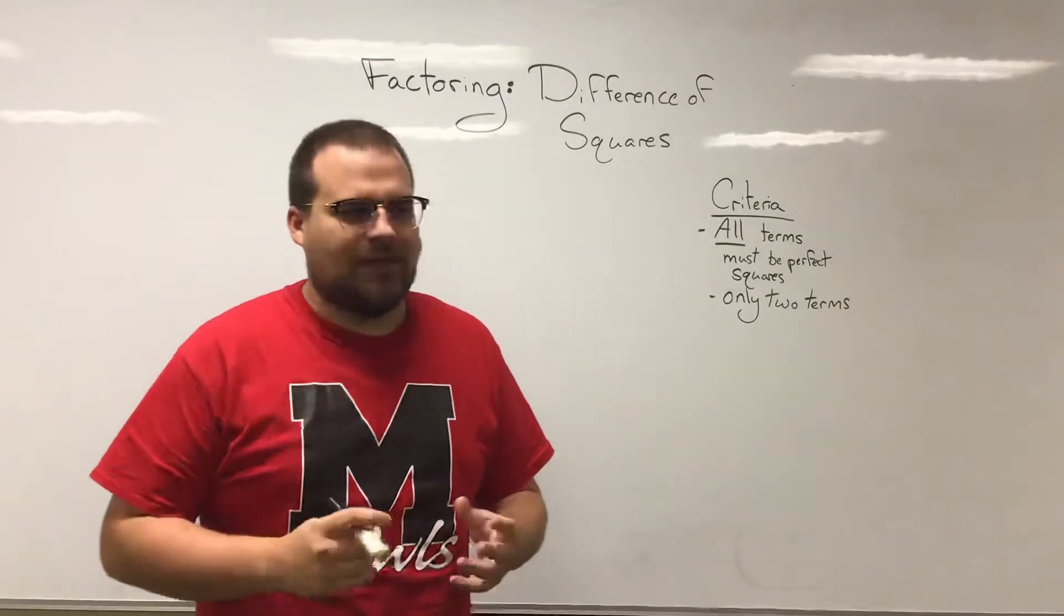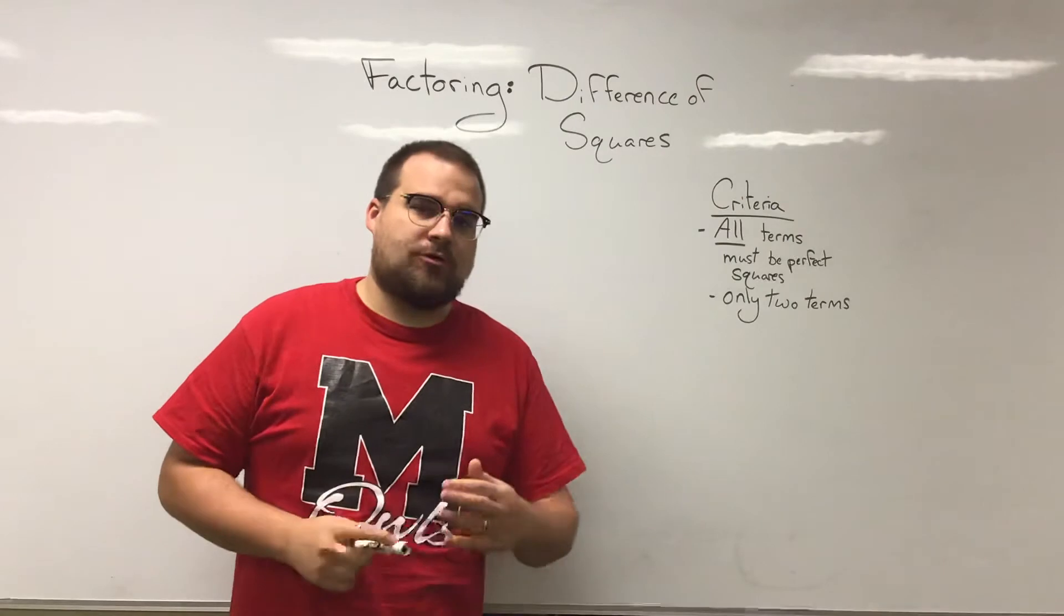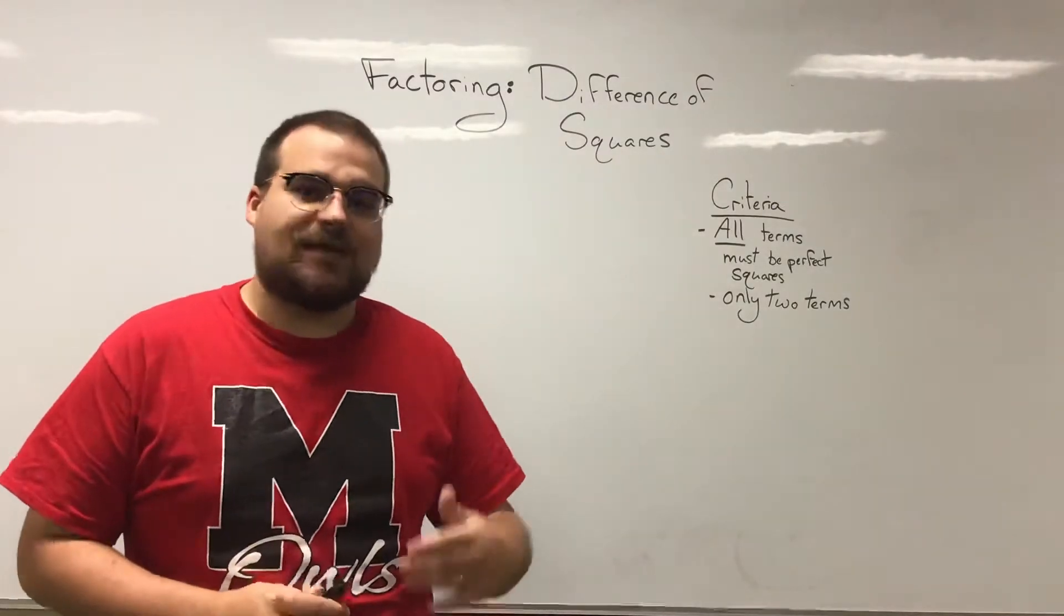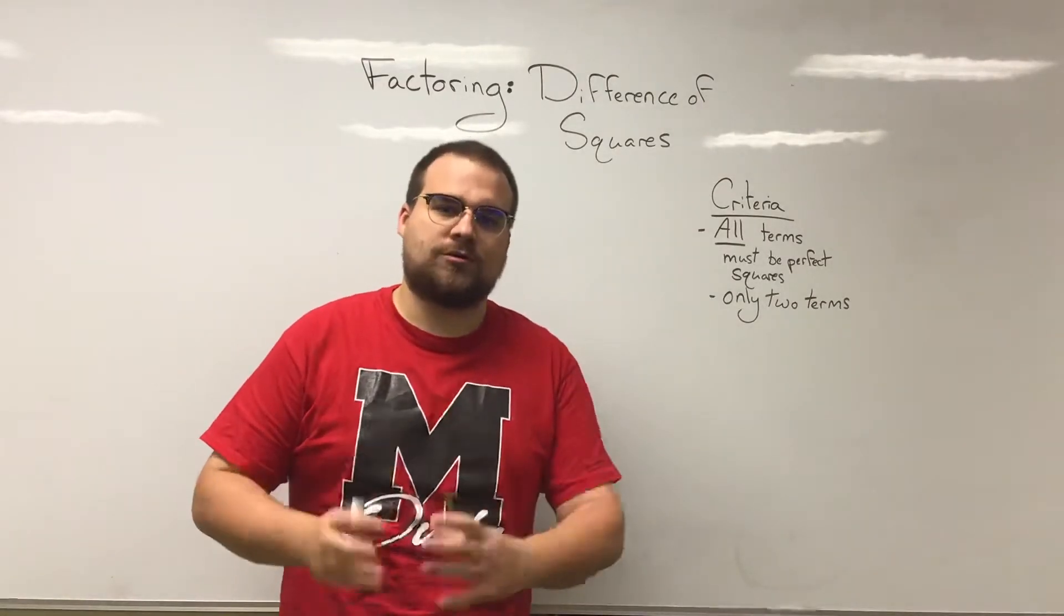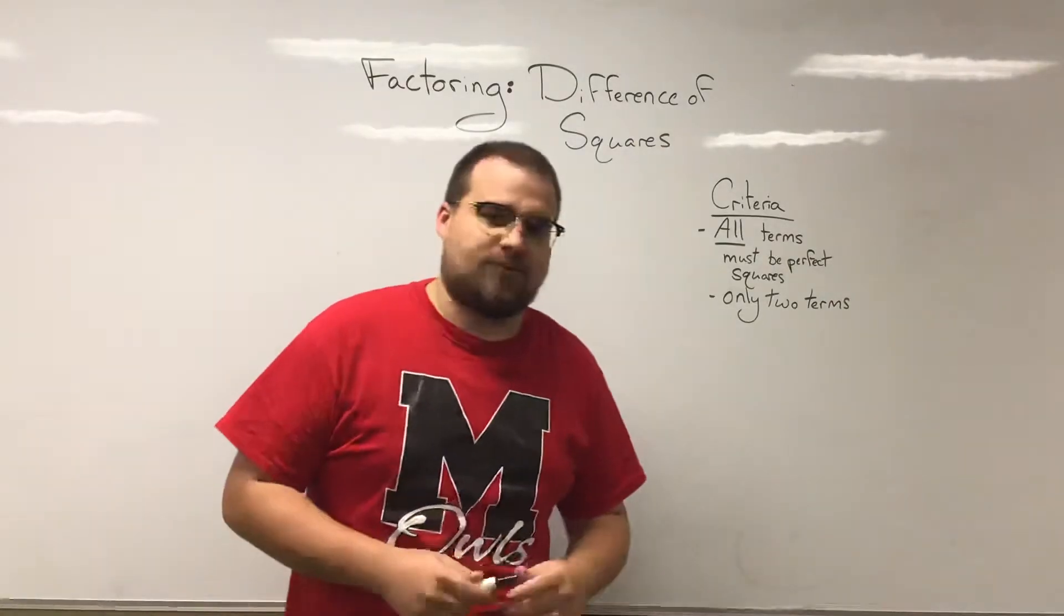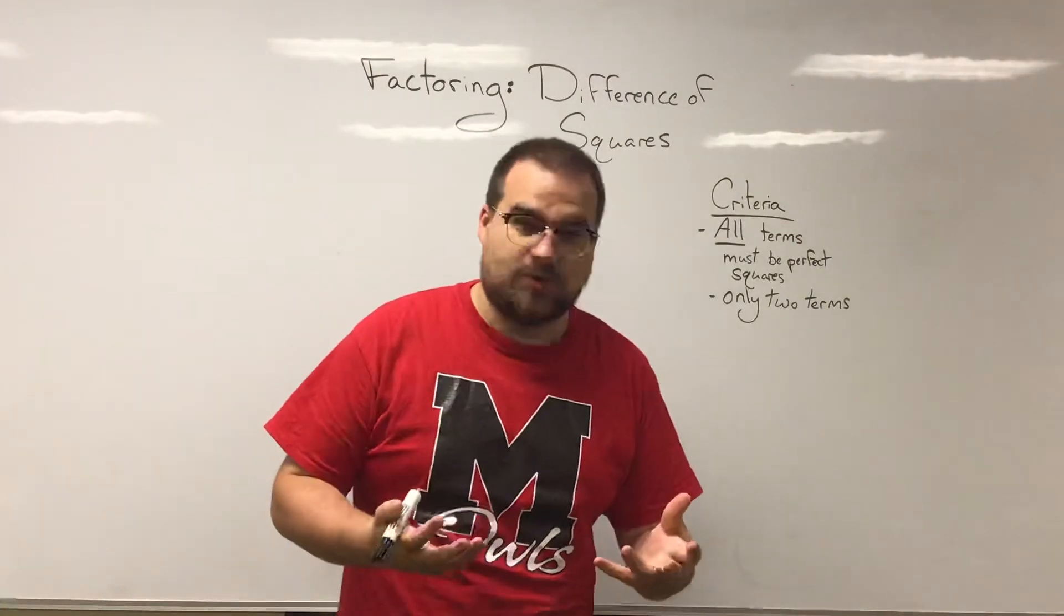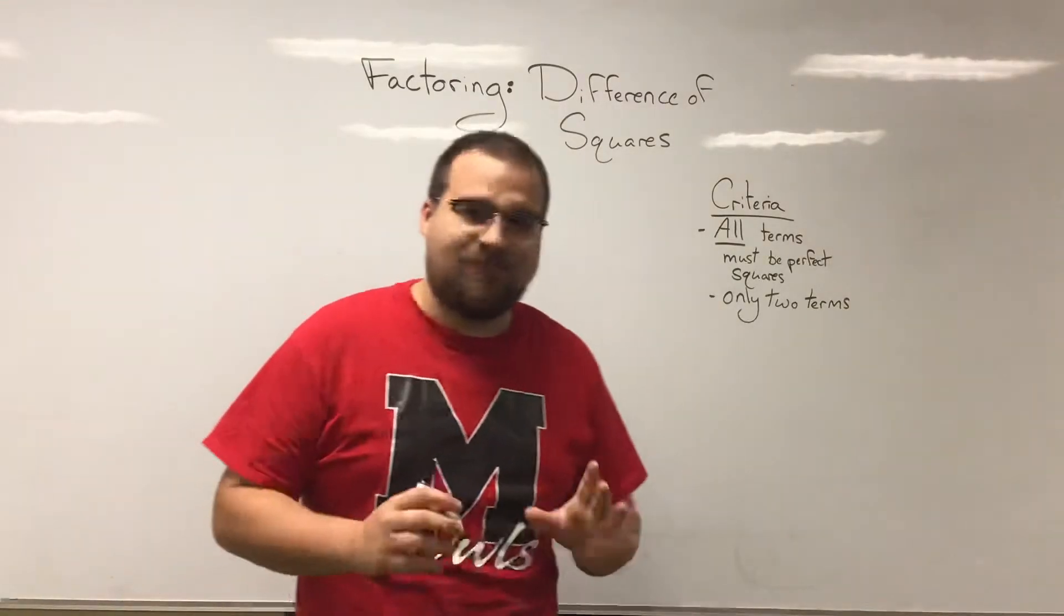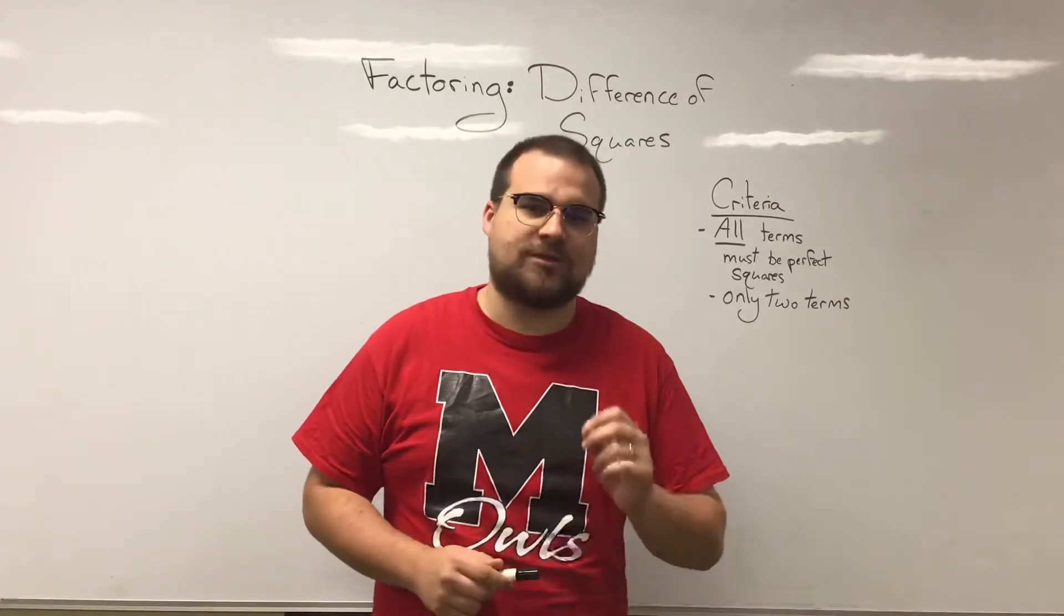Now if you were following along with that kind of factoring map we've talked about before, you know a difference of squares is going to be your primary factoring method after you've taken out any greatest common factor and you only have two terms. So this is the criteria for doing difference of squares. It must be only two terms, aka a binomial, and all terms in the binomial must be a perfect square.